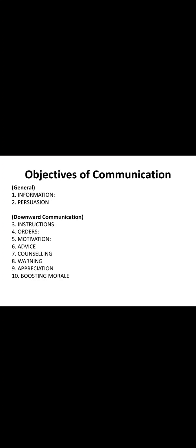The second general objective is persuasion. Persuasion is a convincing power — you are trying to convince someone, either suppliers, bankers, shareholders, consumers, or employees. These are the general objectives of any business communication. Coming to the specific objectives of communication, the specific objectives of downward communication are giving instructions.